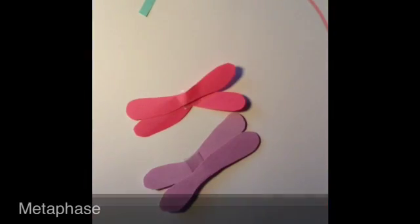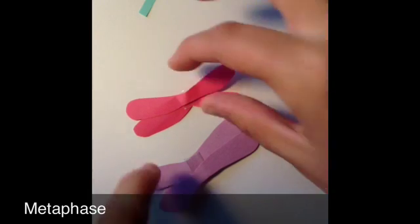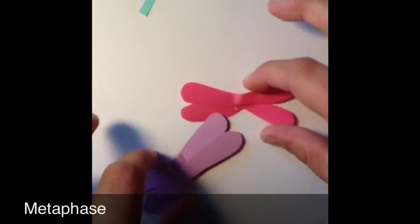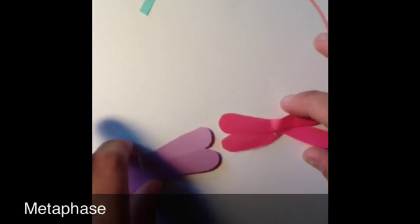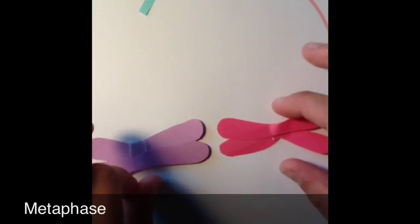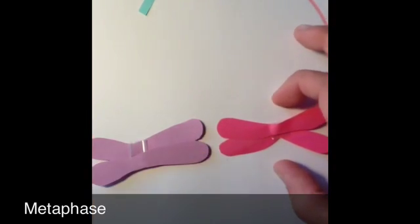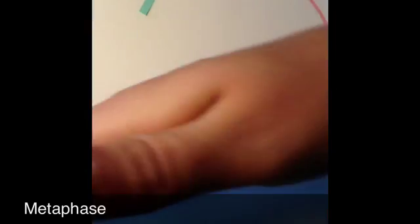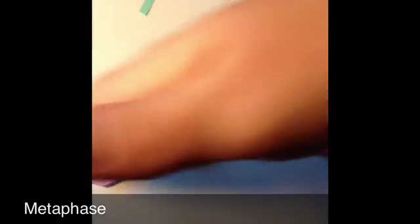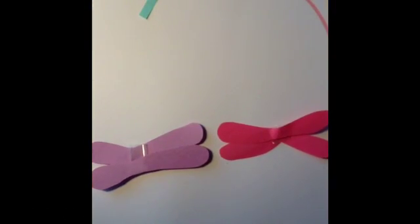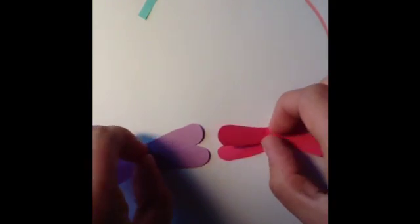So when we get to metaphase, our chromosomes are really individualized and they're condensed about all the way they're going to be able to. And they rearrange towards the center with their centromeres right here along this sort of cellular equator. And this is the part where the spindle apparatus that's coming out of these centrioles is going to attach to the centromeres of each of these chromosomes.